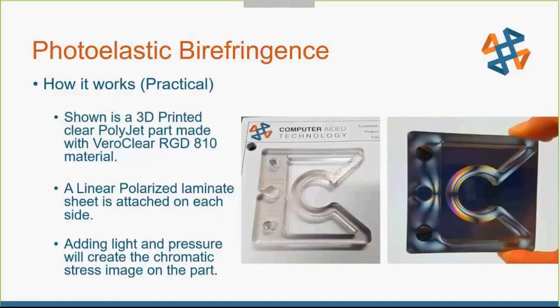Here's the actual application — we created this 3D printed part from a very clear material. You'll notice it has some sharp edges and some rounded edges: a sharp edge in one corner and a radius in another. When I place this between two polarized filters and apply light, you can clearly see the stress concentrate at the square corner, while stress around the radius is much more minimized. This gives you a visual analysis of stress in a part — it only works with clear materials so that light passes through, reflecting back and forth between both sides of the filter.